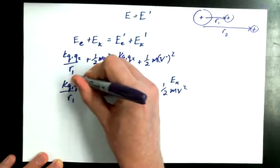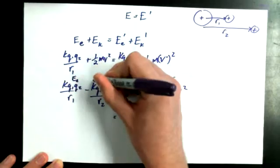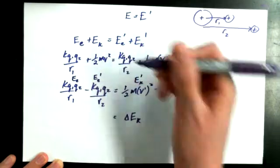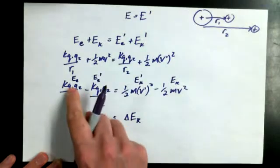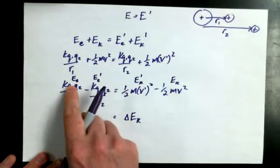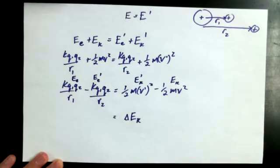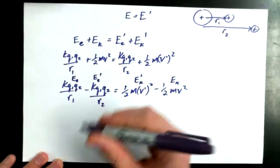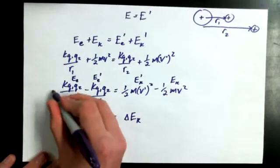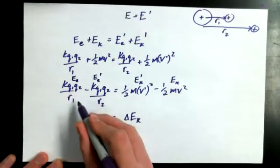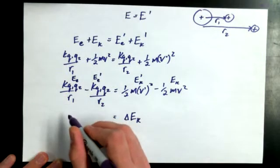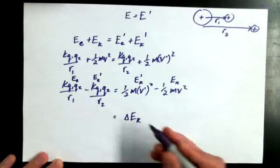On the left-hand side, this is ee, and this is ee primed. If I had ee primed minus ee, then I could say it's delta e. What about this? What if I just say, well, I could multiply the whole thing by negative.